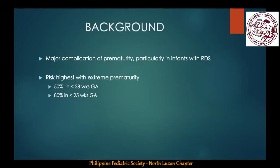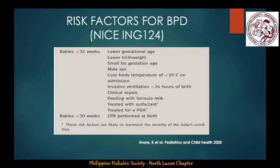Bronchopulmonary dysplasia is a major complication of prematurity, particularly in infants with respiratory distress syndrome. The risk is highest with extreme prematurity, with at least 80% of infants born less than 25 weeks gestational age developing severe BPD. Just like ROP, the most significant risk factor is extreme prematurity.